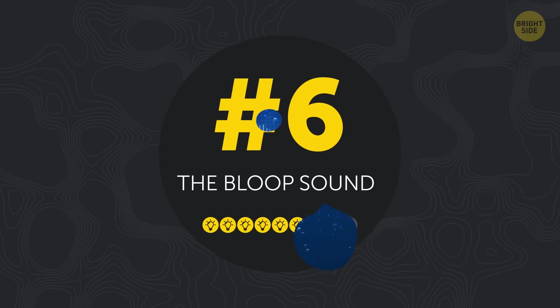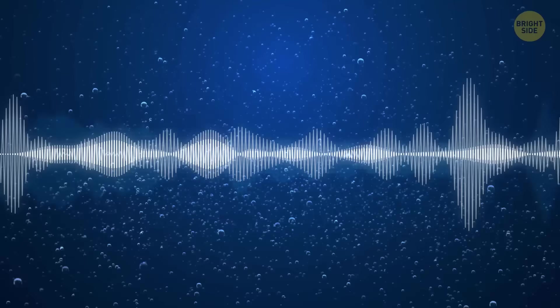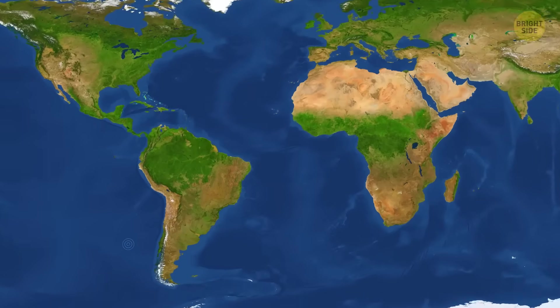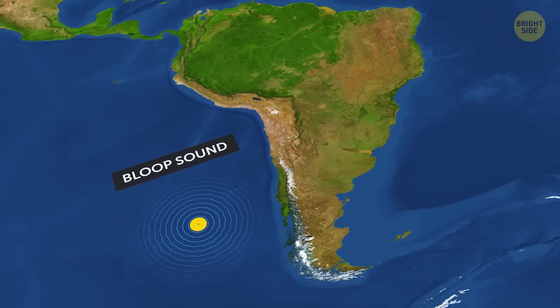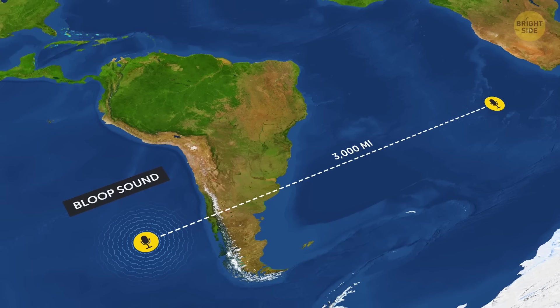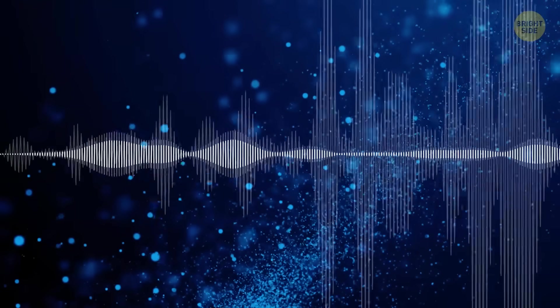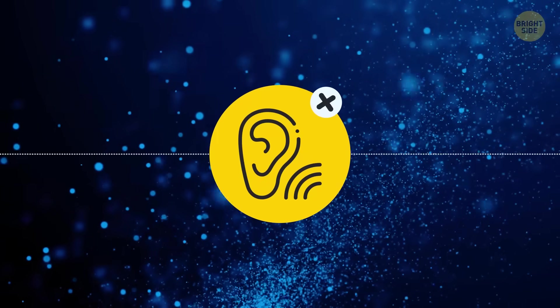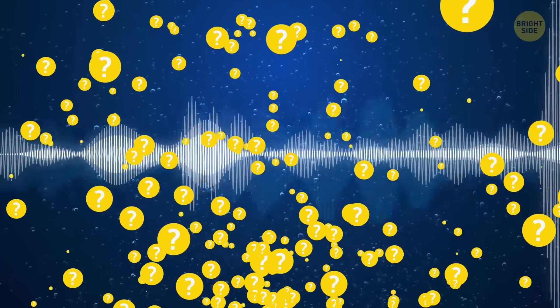The Bloop Sound. For the first and only time, the Bloop was recorded in 1997. This minute-long, low-frequency sound was coming from the southern coast of Chile, and it was so deafeningly loud that underwater microphones as far as 3,000 miles away could hear it. But the most spine-chilling thing about this noise is that no one has ever heard it again.